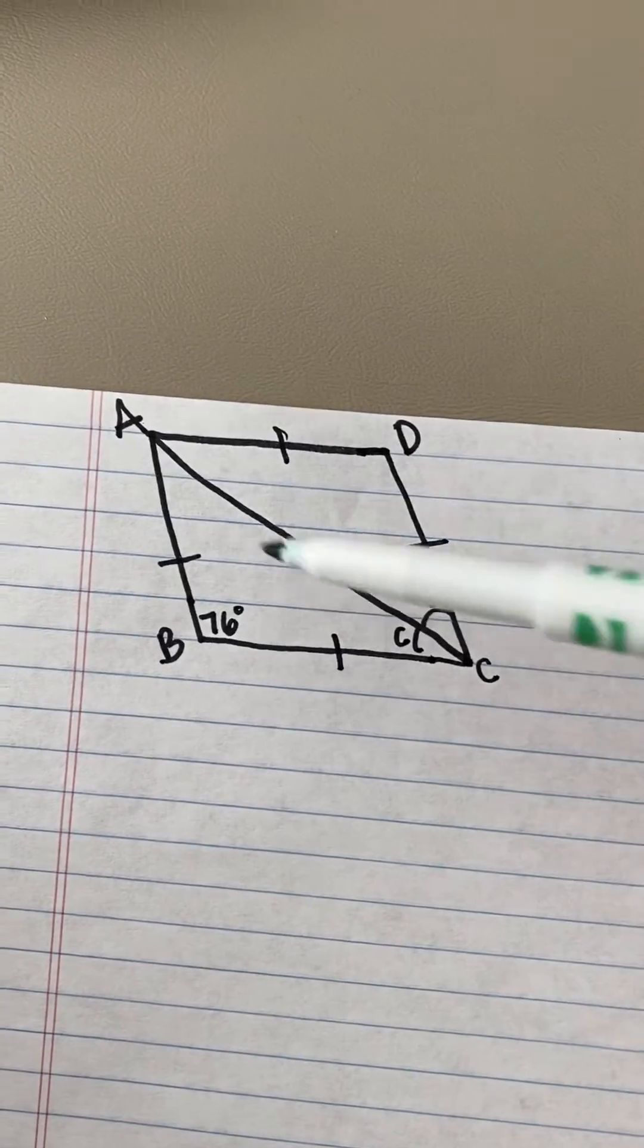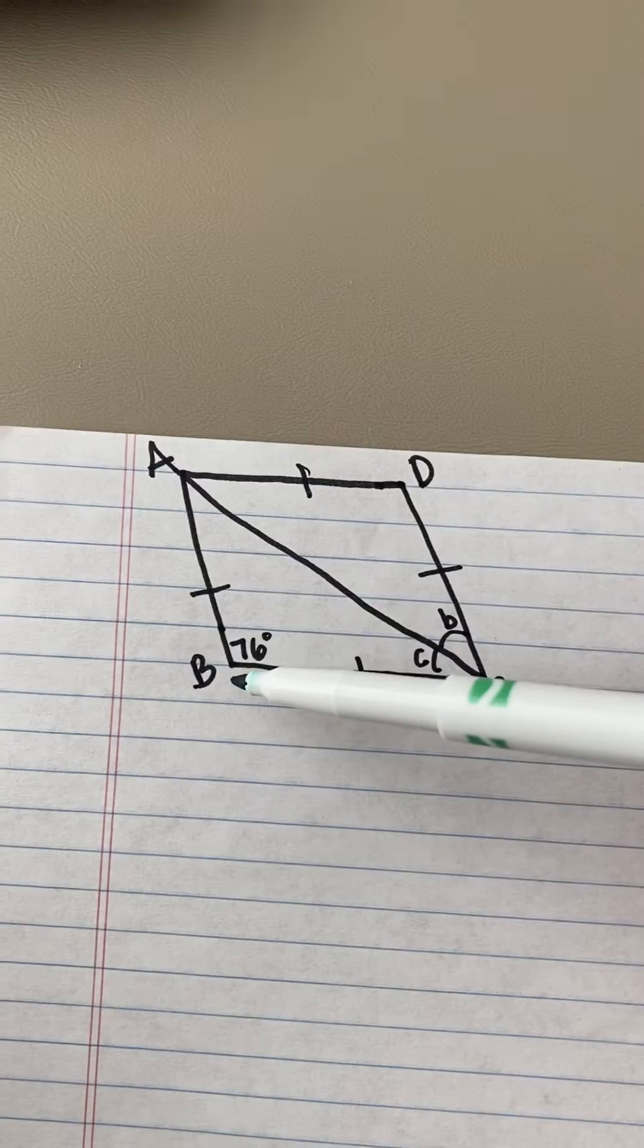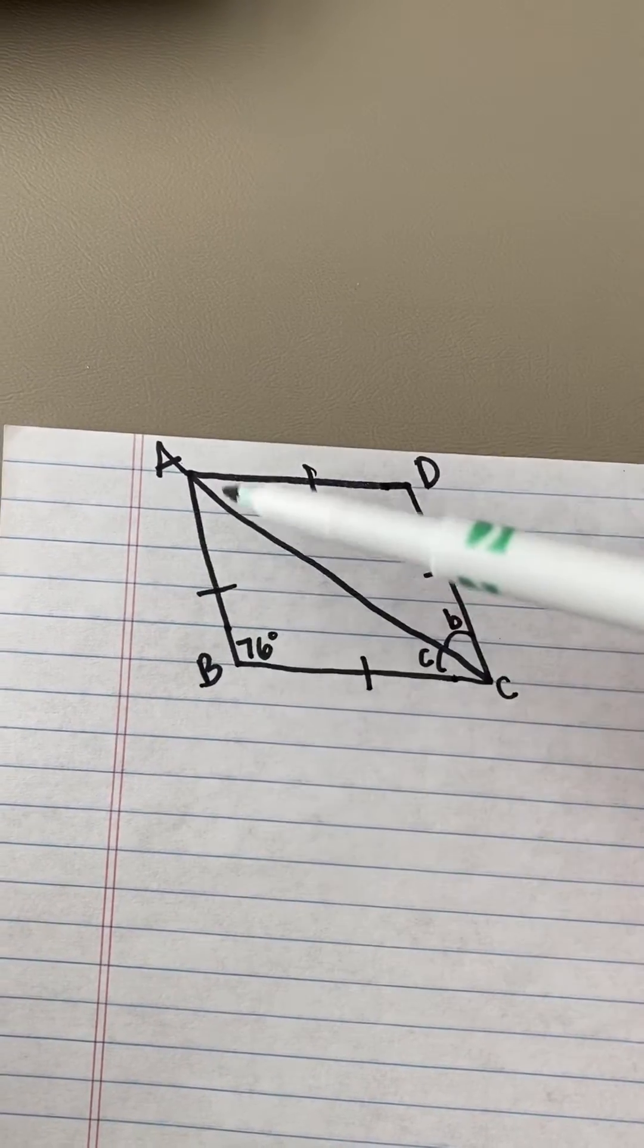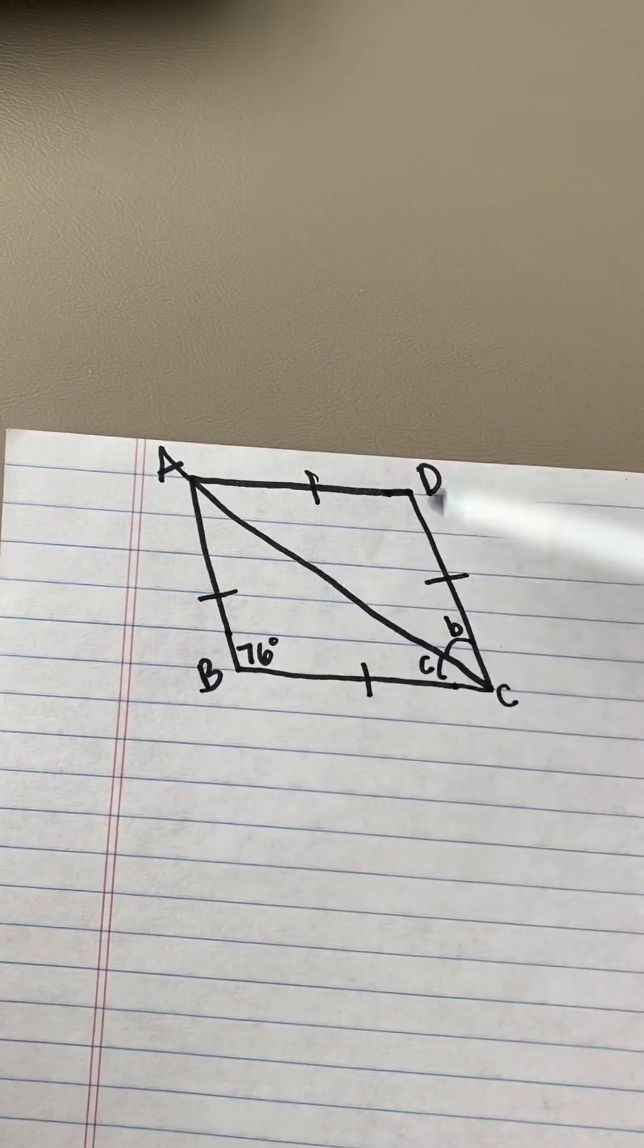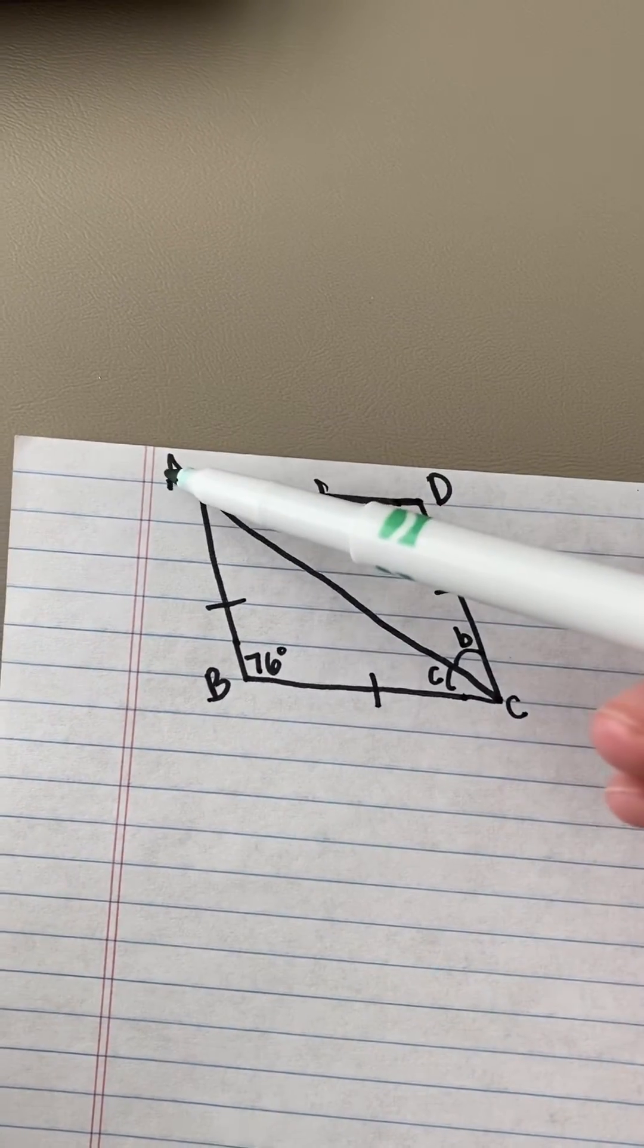In our hands-on activities, we learned that rhombuses have four equal sides, and since they are a parallelogram, they have opposite sides are parallel and opposite angles are congruent.